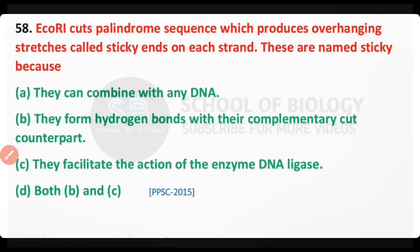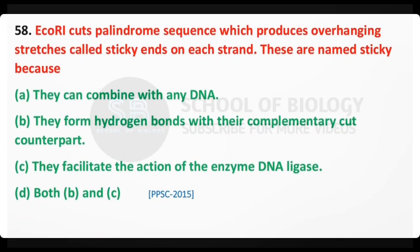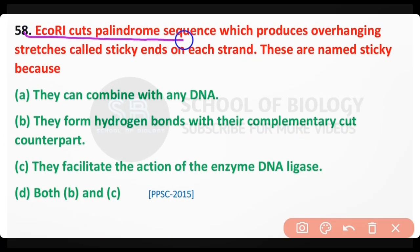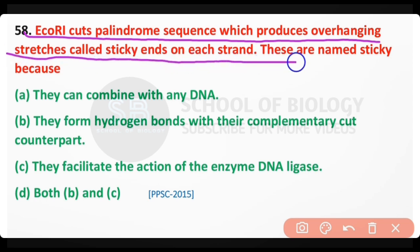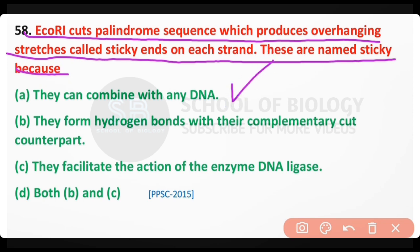Question number 58. EcoRI cuts the palindromic sequence, which produces overhang stretches called sticky ends on each strand. These are named sticky because they can combine with any DNA. The correct answer is option A.